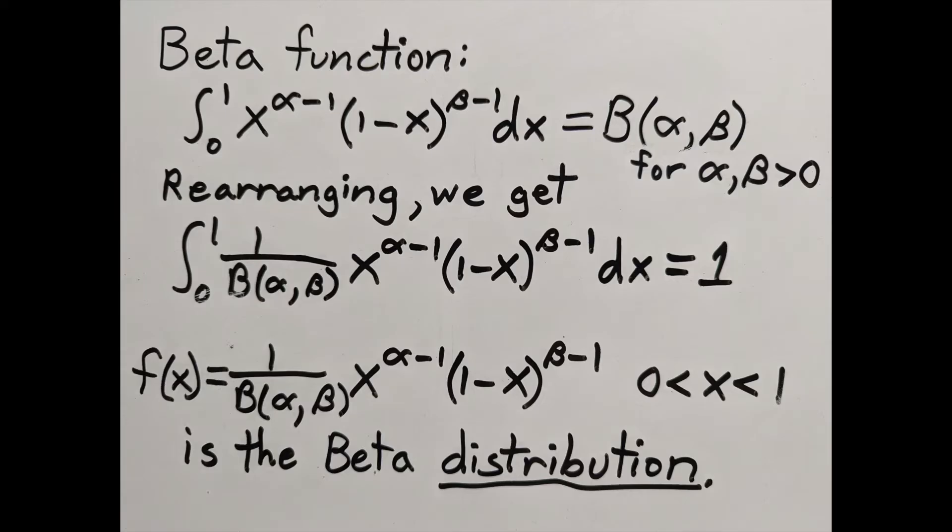The beta distribution is defined using the beta function, which I covered in another video. Here's the integral that defines the beta function, which depends on two positive parameters, alpha and beta. The beta function has been integrated over x, so it doesn't depend on it.